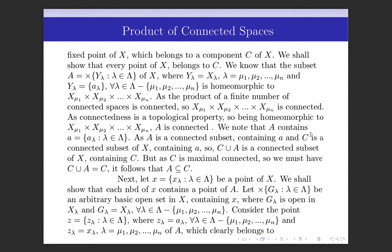We know that A contains the fixed point A = {a_λ}, λ ∈ Λ, since Y_λ = {a_λ} for all λ ≠ μ₁, …, μₙ, and for the remaining coordinates Y_λ = X_λ. So A is contained in the component C. As A is a connected subset containing A and C is a connected subset containing A, these two connected sets are not disjoint, so their union C ∪ A is connected. Since C is maximal connected, we must have C ∪ A = C, so A ⊆ C.